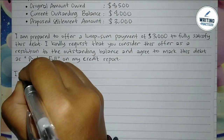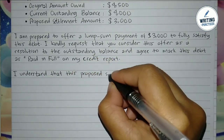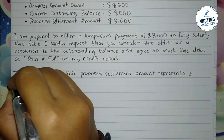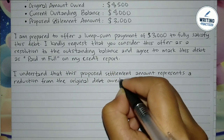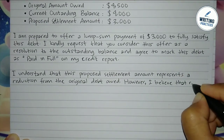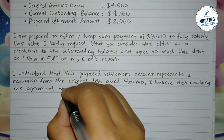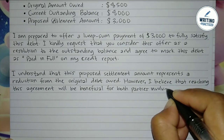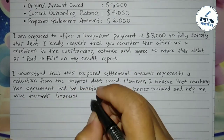In the fourth paragraph, this is where you talk about the rationale. You need to give an explanation of the debtor's willingness to settle — you can write: 'I understand that this proposed settlement amount represents a reduction from the original debt owed.' Besides that, you need to also give an acknowledgement of financial responsibility and convince the recipient that you will be responsible for your debt, and ensure that this resolution is best for both parties. In this example, the writer stated: 'However, I believe that reaching this agreement will be beneficial for both parties involved and help me move towards financial stability.'